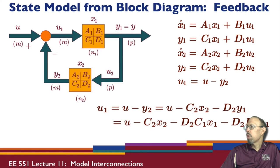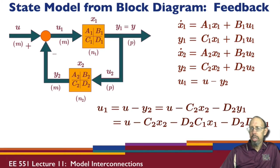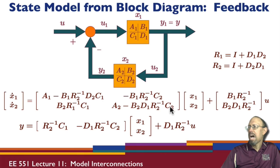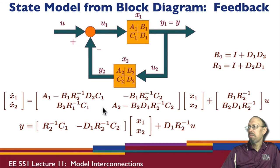To find u1, I take that term to the other side, factor out u1, then multiply through by the inverse — in this case the inverse of (I plus D2*D1). We can go through and show we get this overall state model, which is much more complicated than the series or parallel connections. In particular, there are R matrices that require inverses: R1 is (I plus D1*D2) and R2 is (I plus D2*D1), where the identity matrix is of dimension p and dimension m respectively.